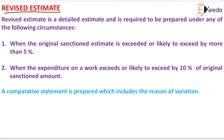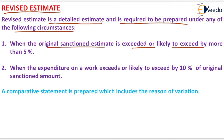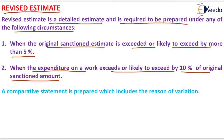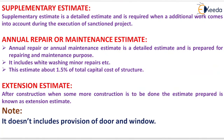The revised estimate is a detailed estimate required under specific circumstances: when the original sanctioned estimate is exceeded or likely to exceed by more than 5 percent, or when the expenditure on a work exceeds or is likely to exceed by 10 percent of the original sanctioned amount. A comparative statement including the reasons for variation must be provided.